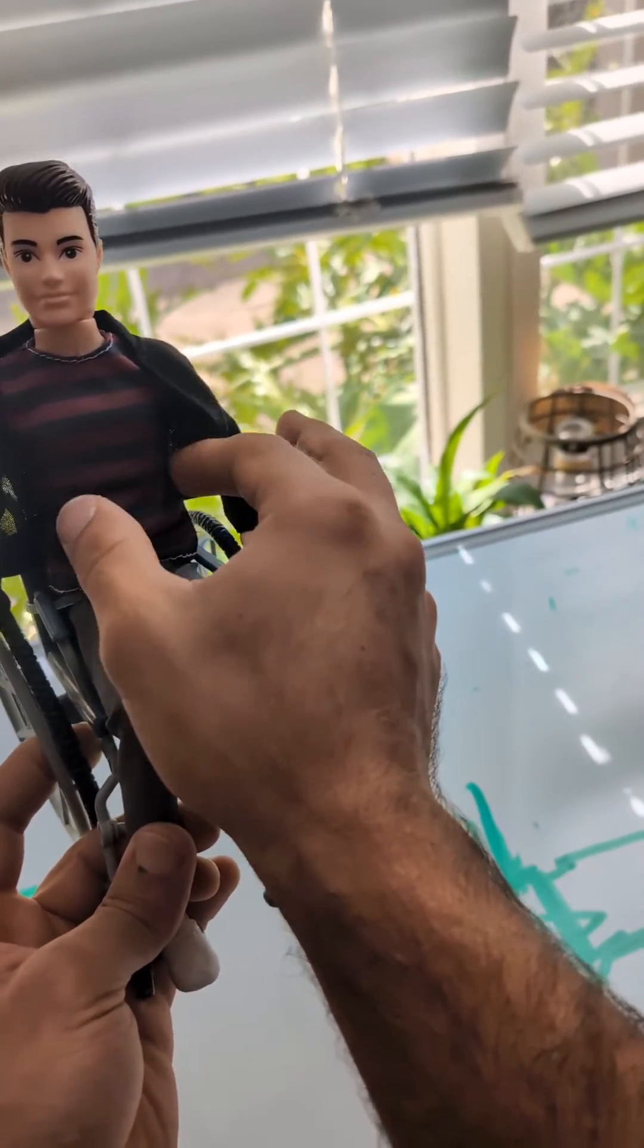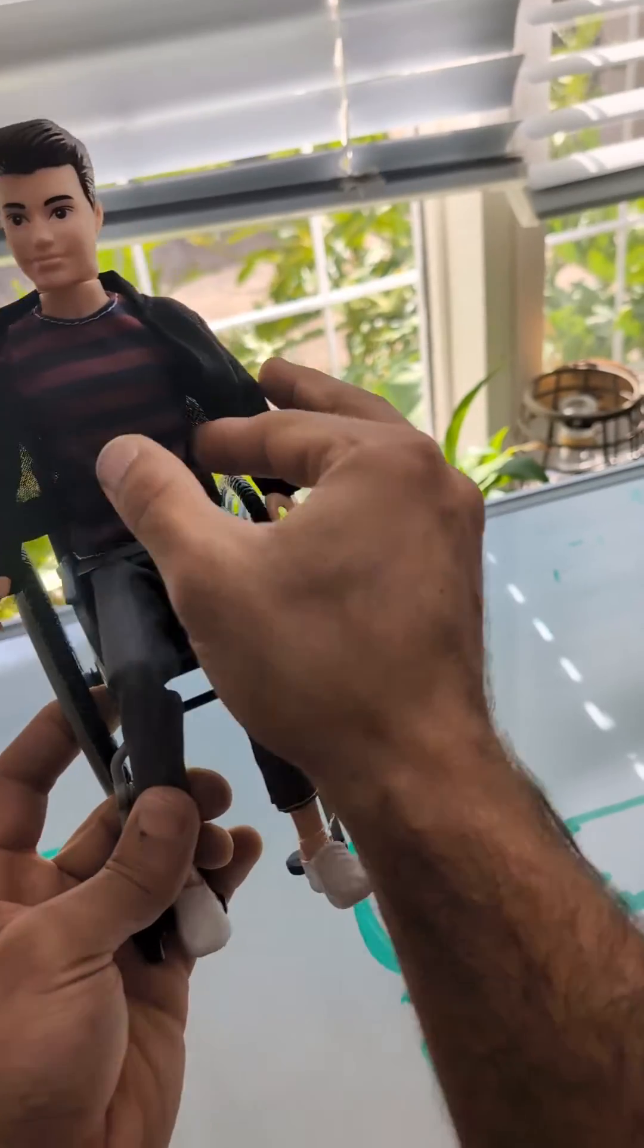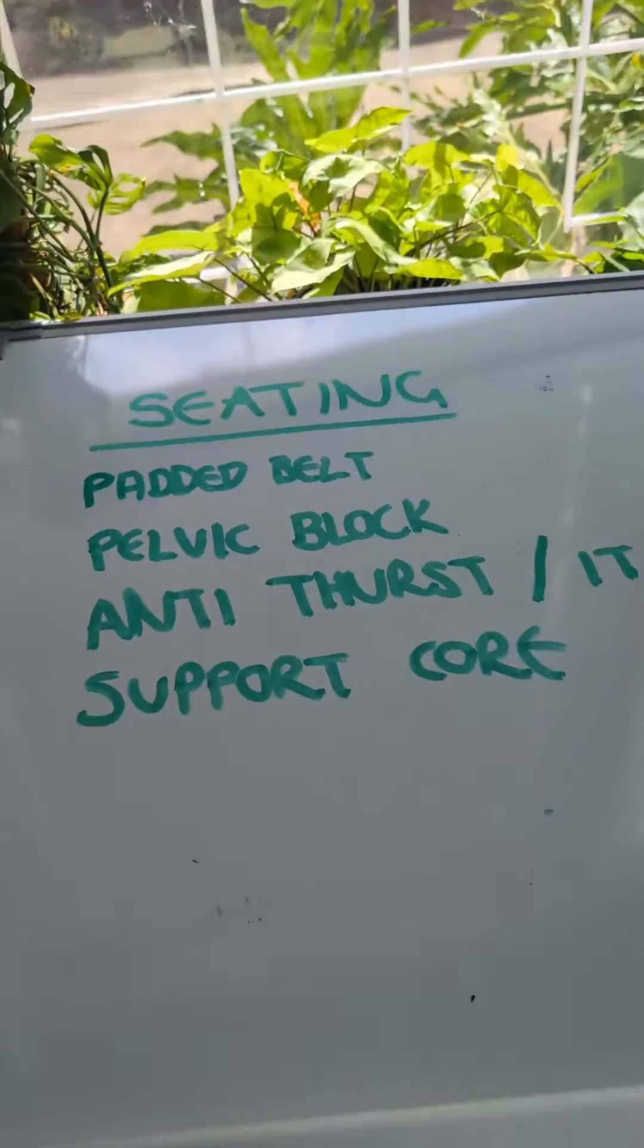So if you want to support, if they've got a weak core, then you might want to support with what they call a deep contoured back or some lateral support.